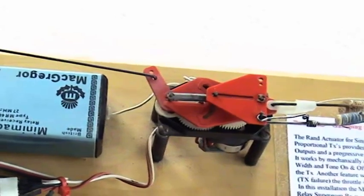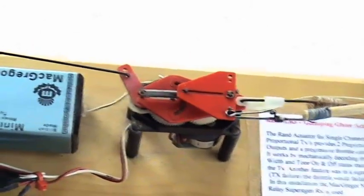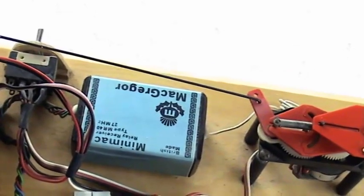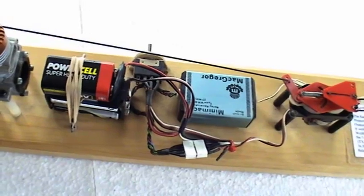The cams on it gave rudder and elevator at the rear. These were proportional controls and the cam at the front is for progressive throttle.